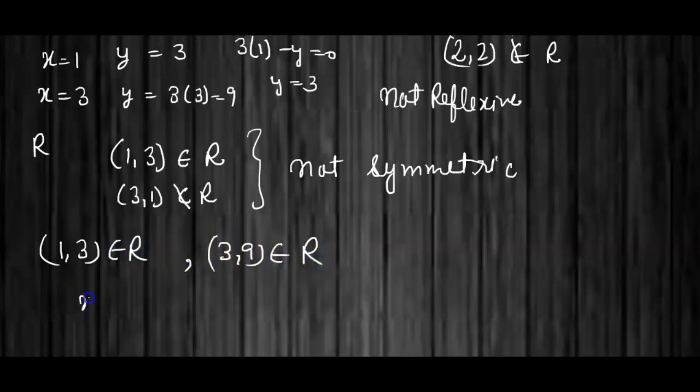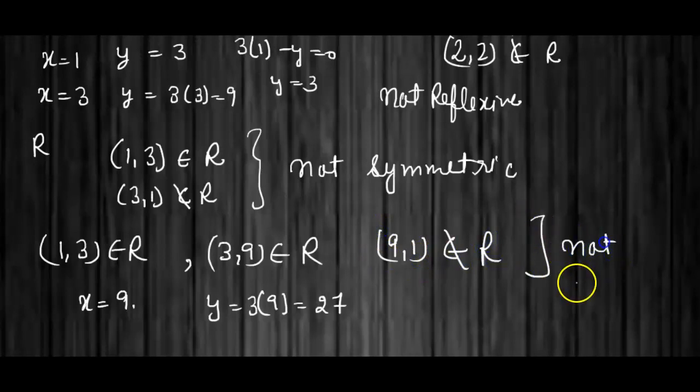But when x = 9, y = 3(9) = 27. So (9,1) is not in R. Therefore, it is not transitive. Thank you very much.